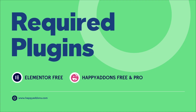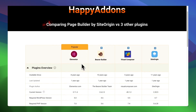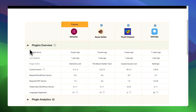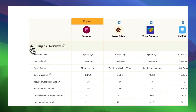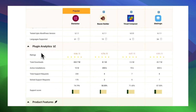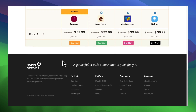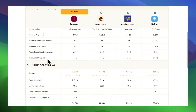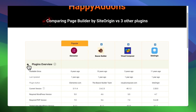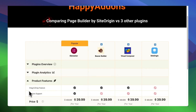You will need Elementor free, Happy Addons free, and Happy Addons Pro to create the advanced comparison table. With this comparison table widget, you can create highly customizable and attractive comparison tables. Here is a demo of the type of tables you can build. We will show the basic features included, and in the bonus part, we will show how you can add advanced items within it.